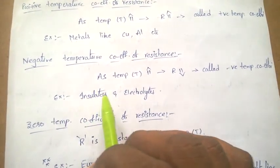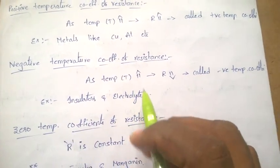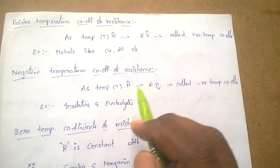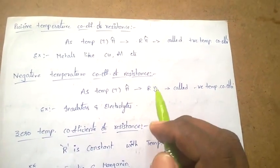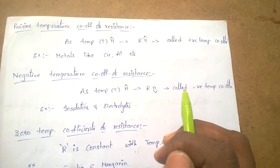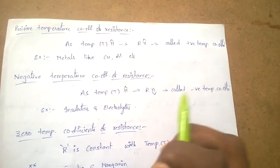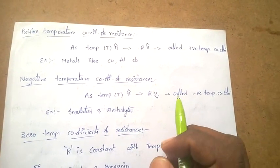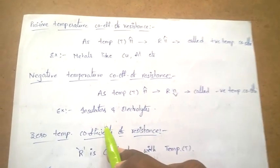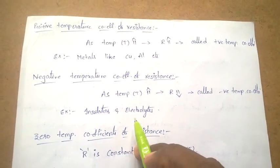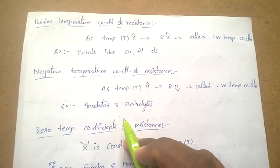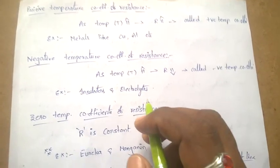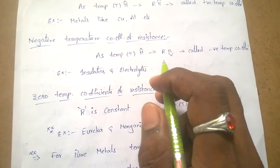Negative temperature coefficient of resistance: when the temperature of the material increases, the resistance decreases. This is called negative temperature coefficient. For example, insulators and electrolytes — in the case of insulators, when we increase the temperature, the resistance decreases. That is why they are called negative temperature coefficients.